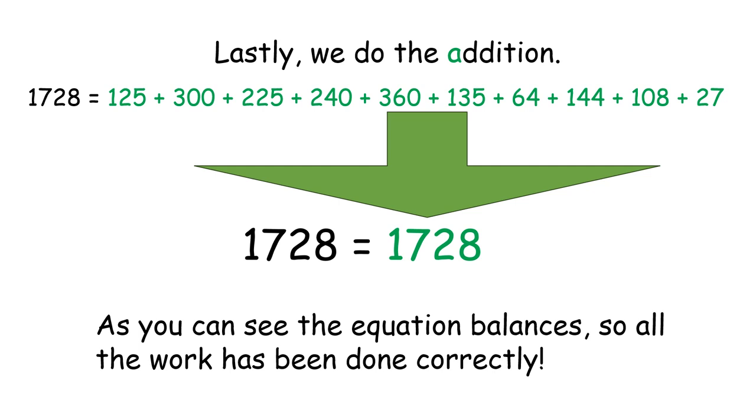Lastly, we do the addition. 125 plus 300 plus 225 plus 240 plus 360 plus 135 plus 64 plus 144 plus 108 plus 27 equals 1728.